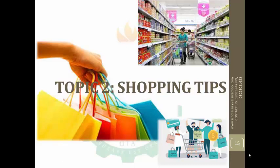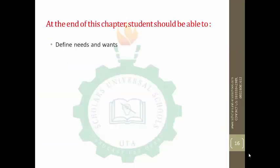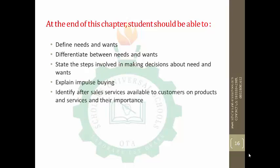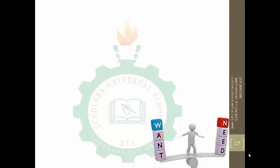Welcome to this edition of Scholars Universal School Business Studies online class. Last class we discussed consumer rights and responsibilities. In today's class we'll be talking about shopping tips. By the end of this class you should be able to define needs and wants, differentiate between them, state the steps involved in making decisions about needs and wants, explain impulse buying, and identify after-sales services available to consumers.